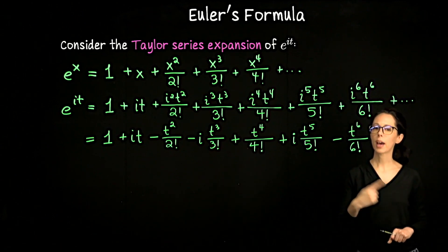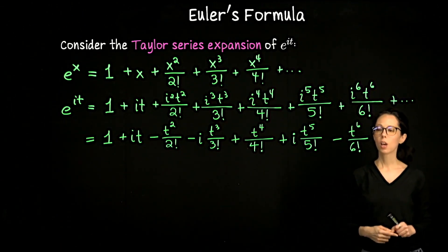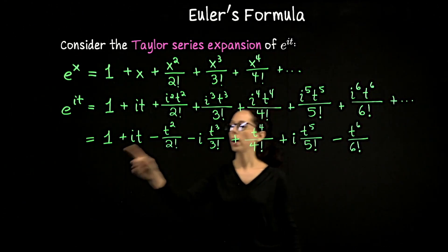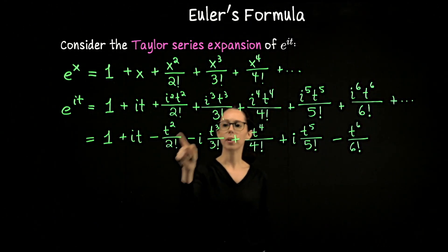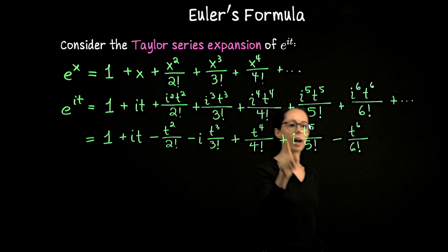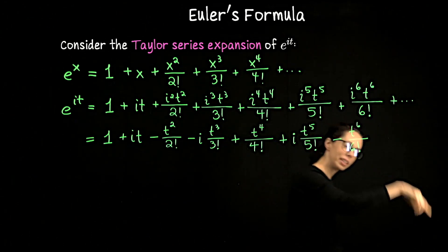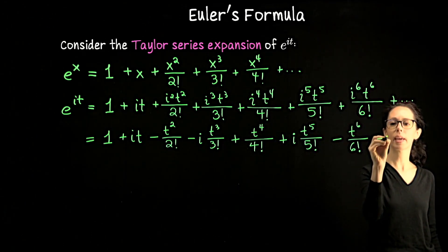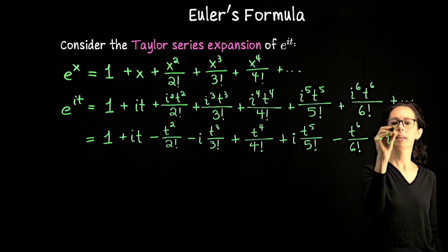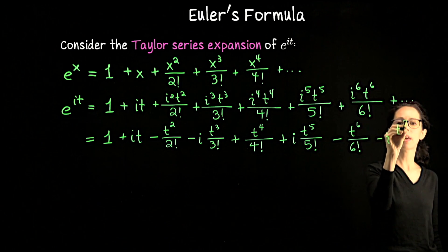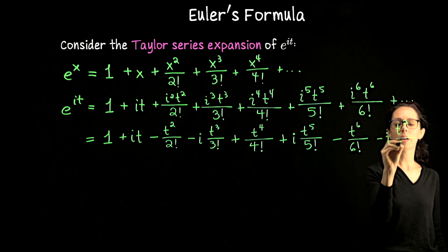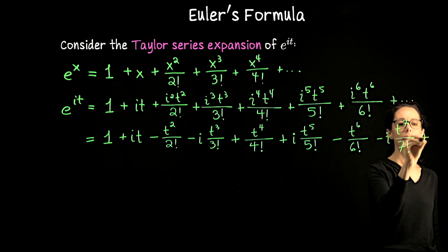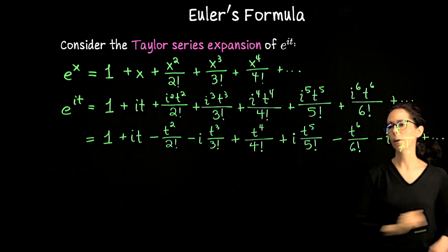Because powers of i are cyclic, we notice a pattern: 1, i, negative 1, negative i, then repeating. So the next term would be negative it to the 7th divided by 7 factorial, and we've made our point.